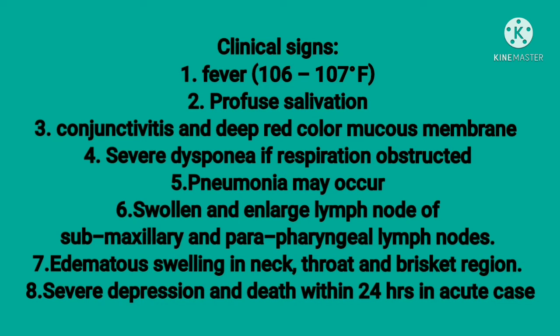Sixth, swollen and enlarged lymph nodes of the submaxillary and parapharyngeal lymph nodes. Seventh, edema and swelling in the neck, throat, and brisket region. The edema swelling is hard and painful and produces severe dyspnea due to obstruction of the respiratory passage.